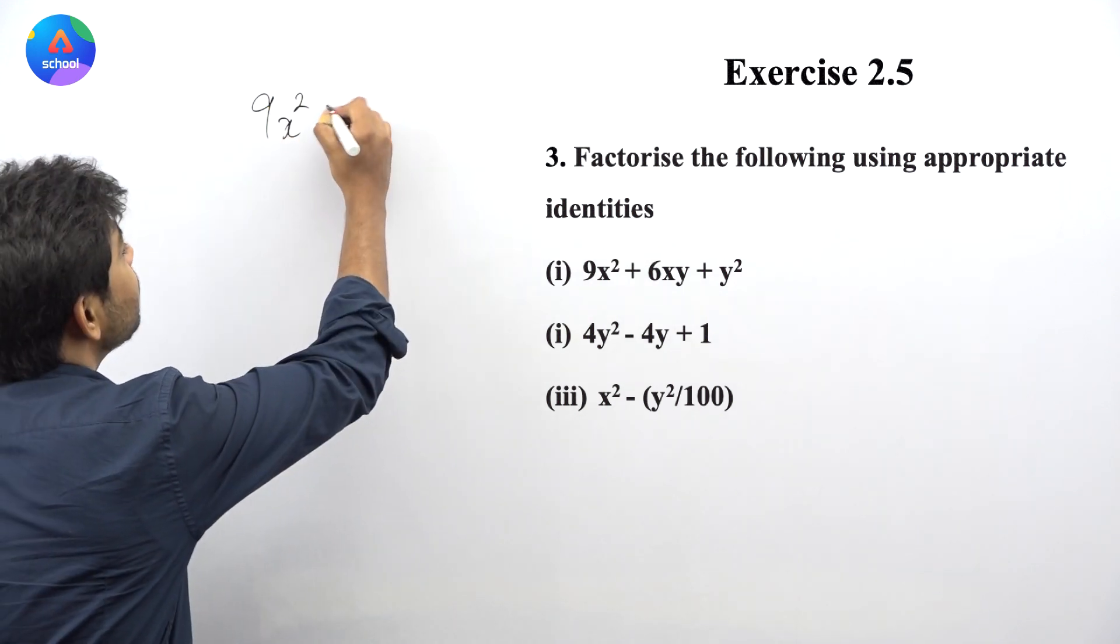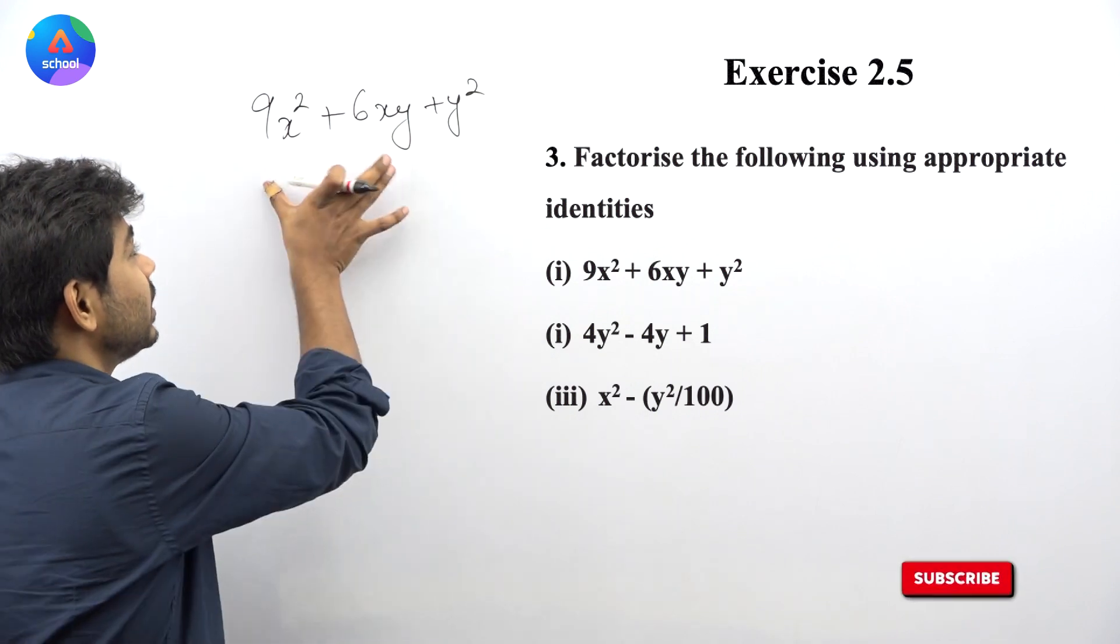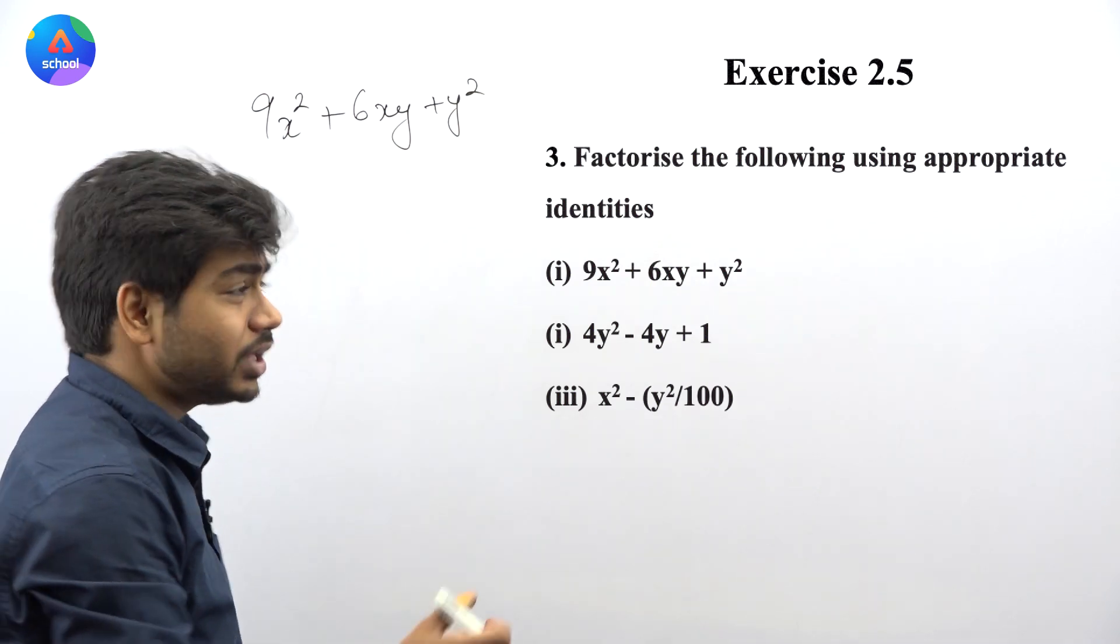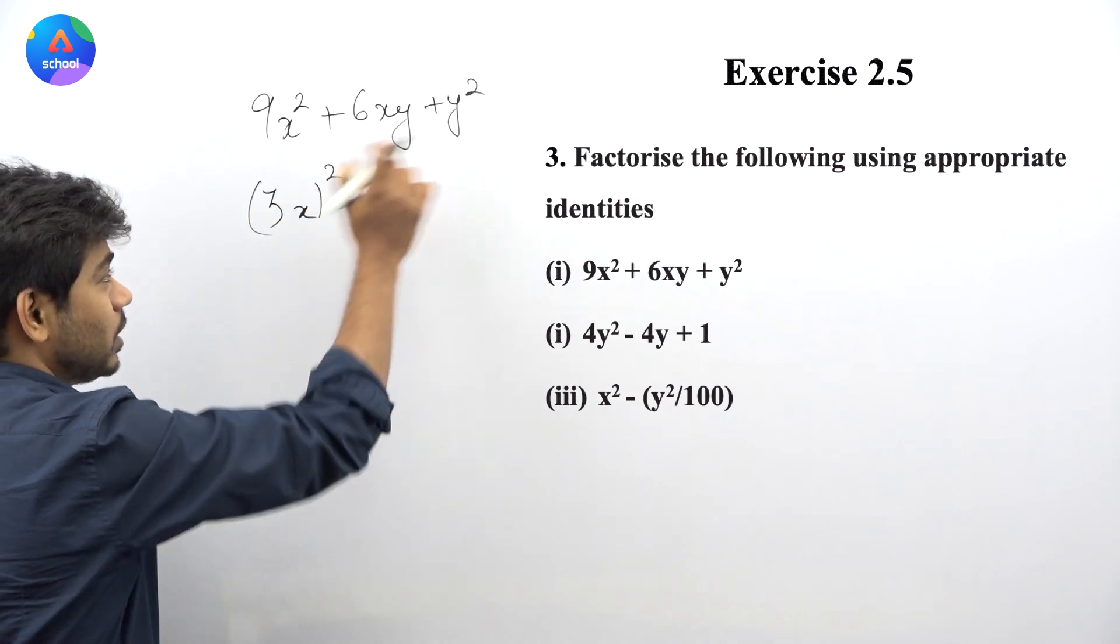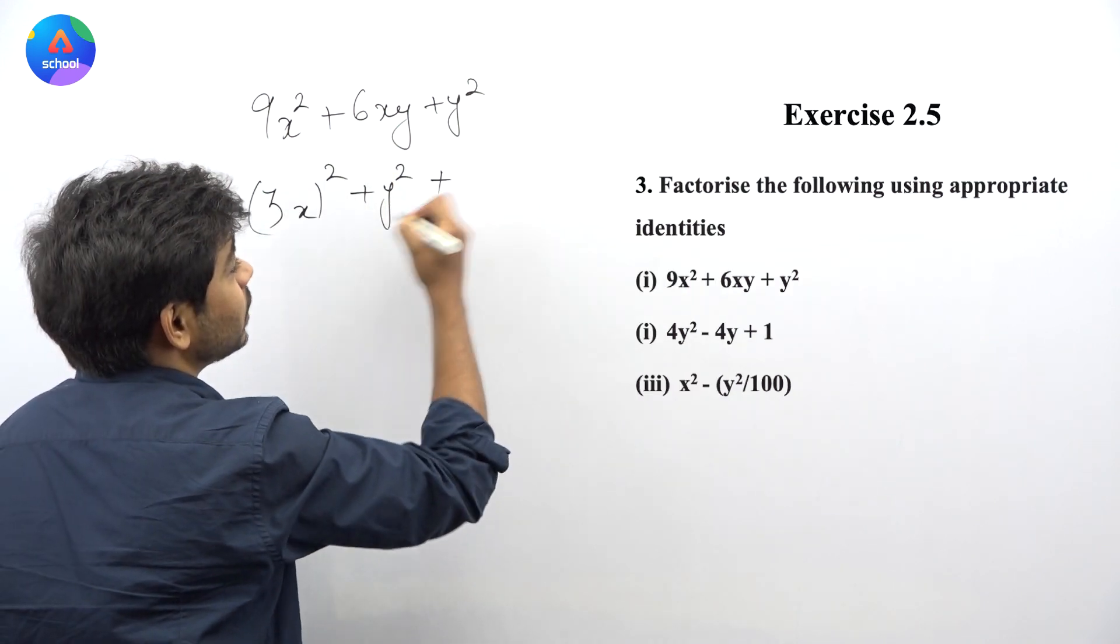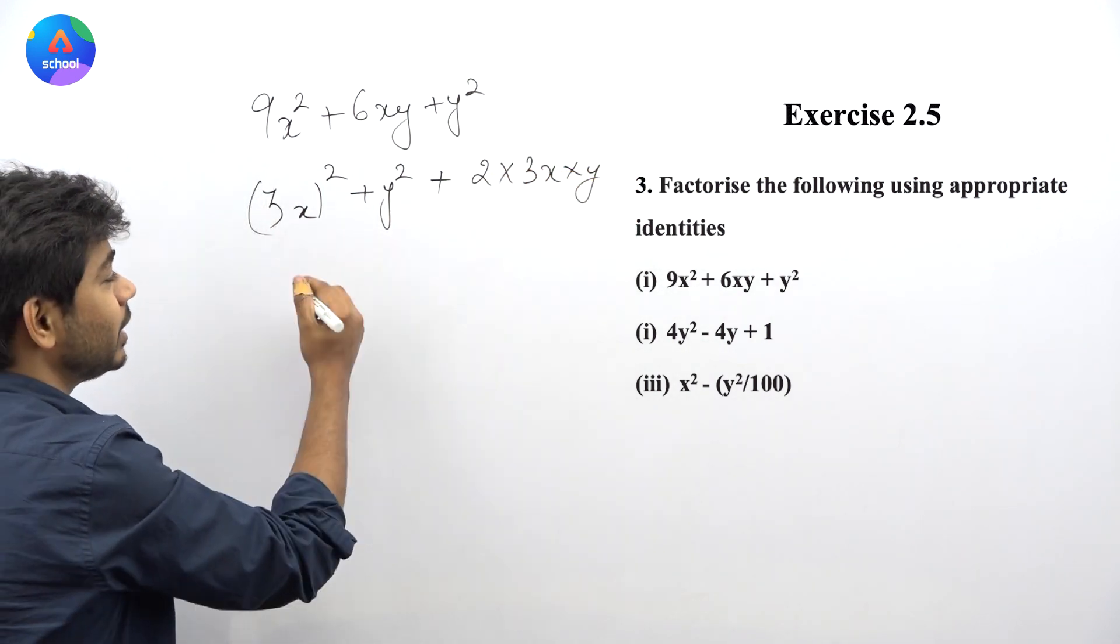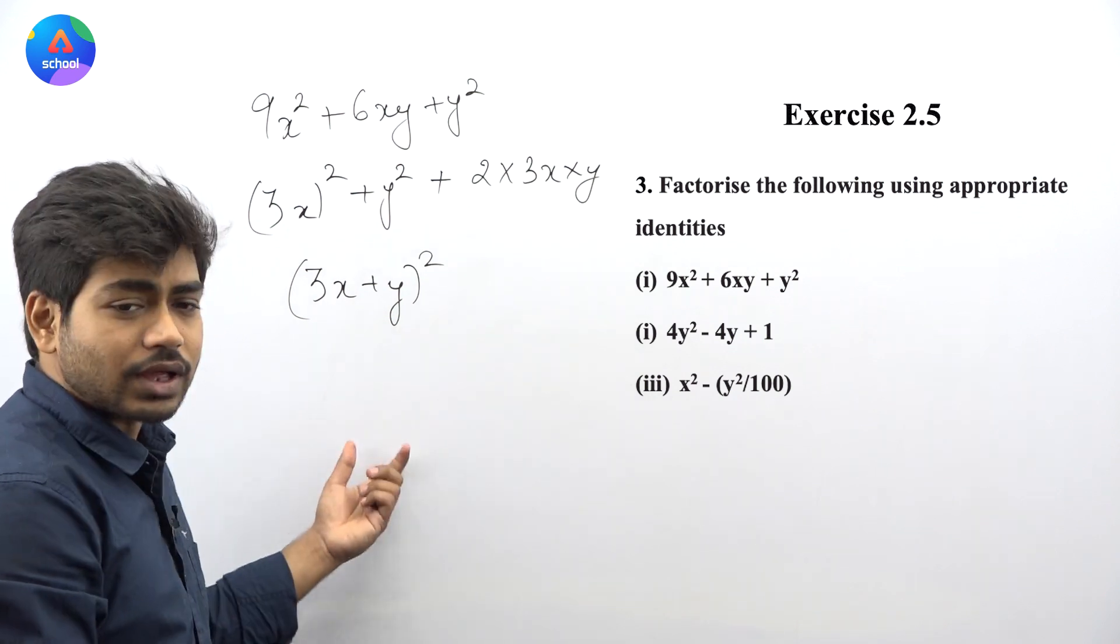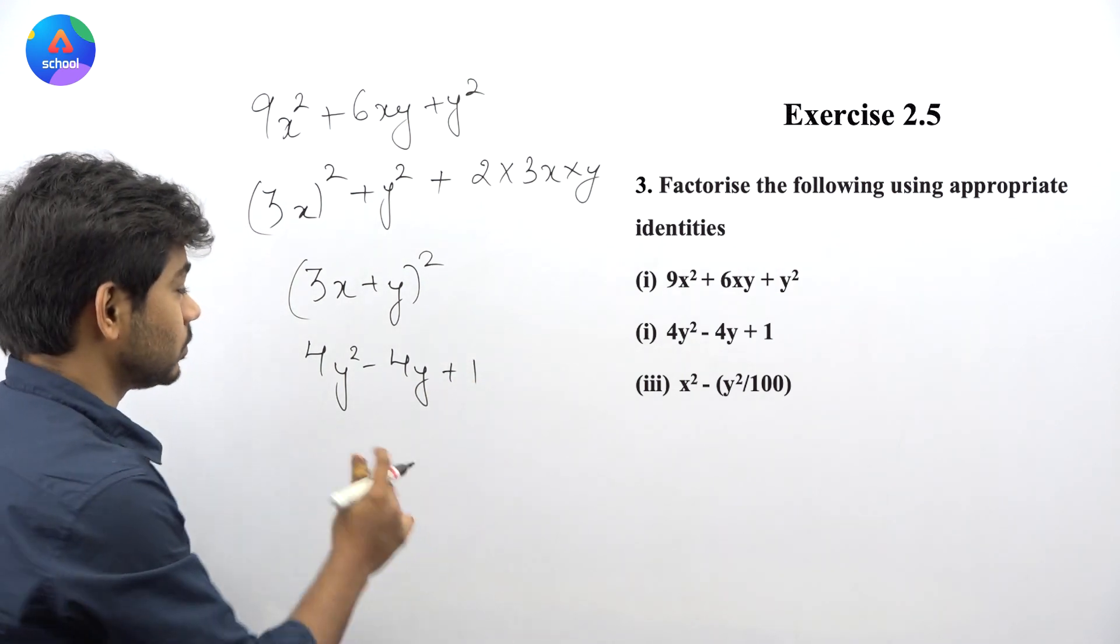For part (i), you're given 9x² + 6xy + y². If we look at 9x², that's (3x)². If we look at 6xy, that becomes 2 times 3x times y. And y² is already a perfect square, so we can apply the identity.